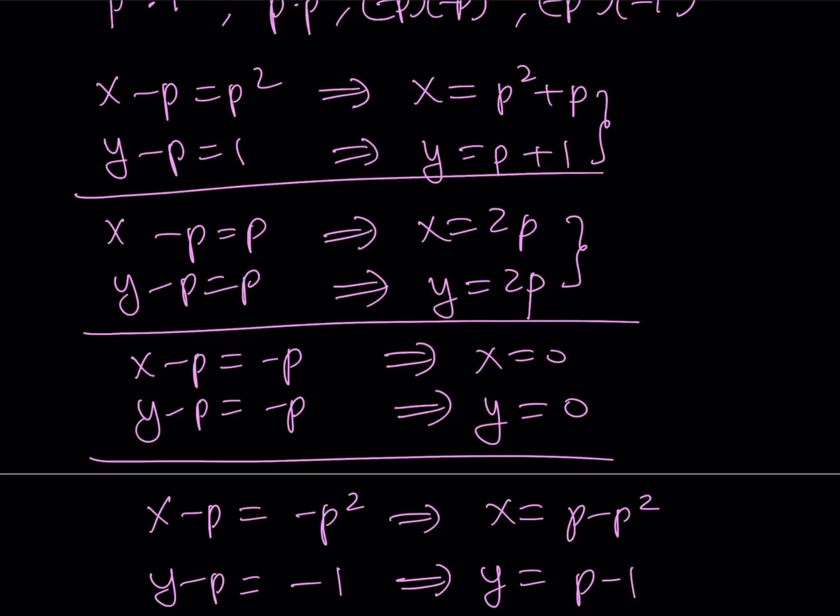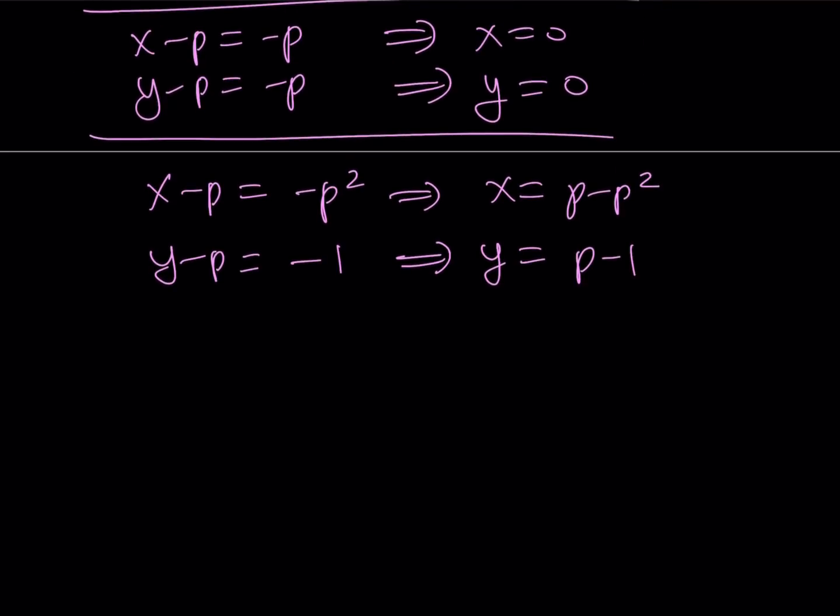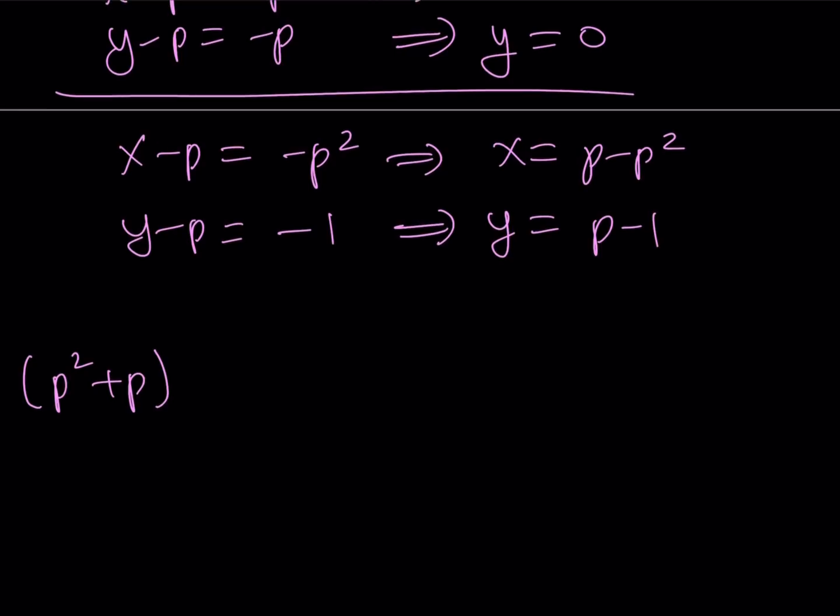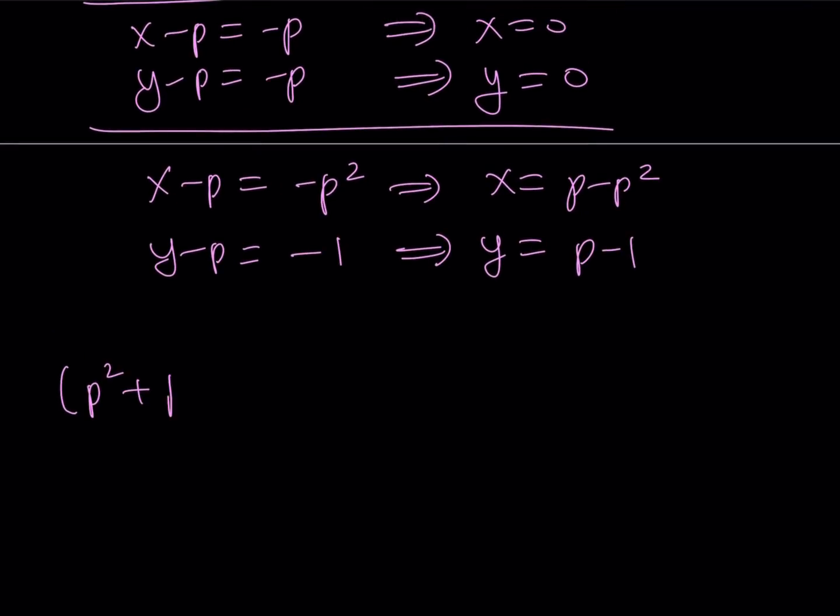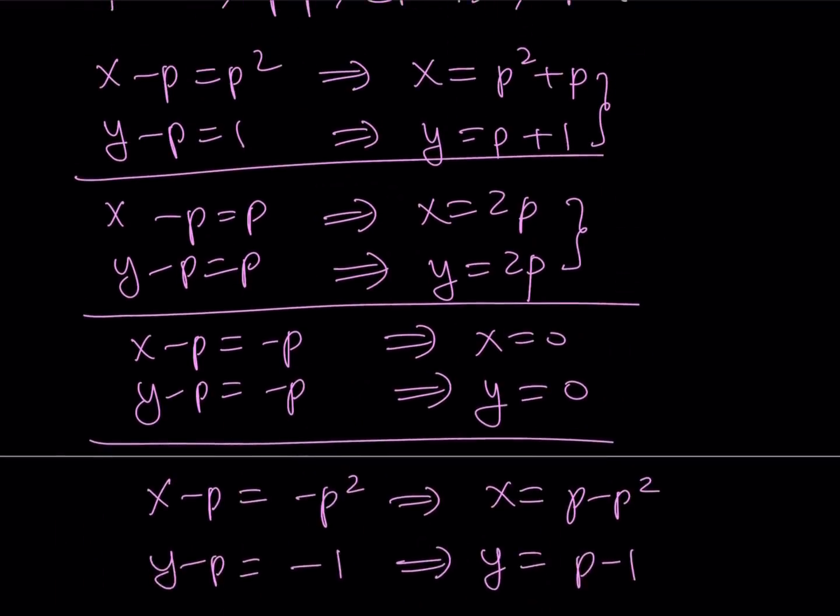Let's go ahead and write the solutions all together as ordered pairs. And I'm also going to consider the switches with X and Y. So our first ordered pair is going to look like this. P squared plus P and P plus 1. That should be an ordered pair. P squared plus P and P plus 1. And then, of course, we can switch them around and write it as P plus 1 with P squared plus P. So that's my first ordered pair.